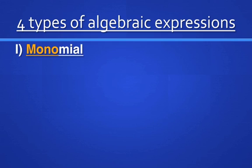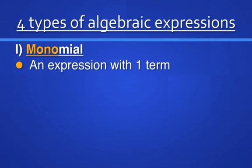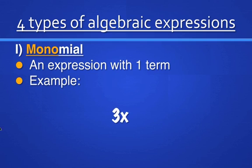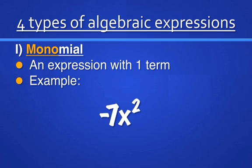Now there are four types of algebraic expressions. The first is a monomial. A monomial is an expression with one term. The prefix 'mono' means one. For example, 3x — there's nothing here separated by addition or subtraction, therefore there's only one term, 3x. Another example, negative 7x squared — even though there's a negative there, we're not adding or subtracting anything, so it's still one term. It is still a monomial.